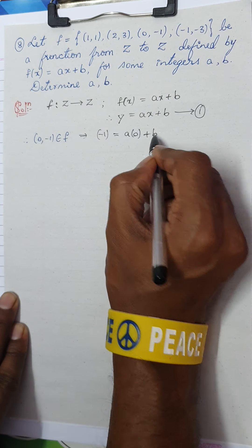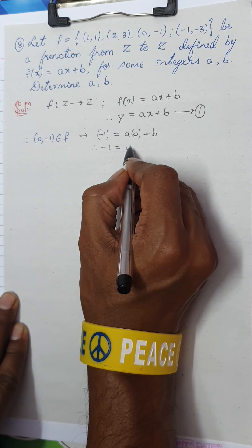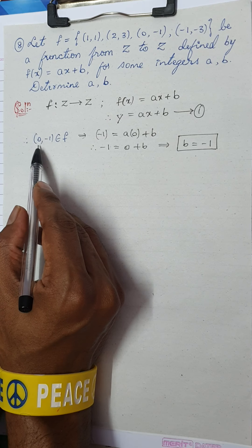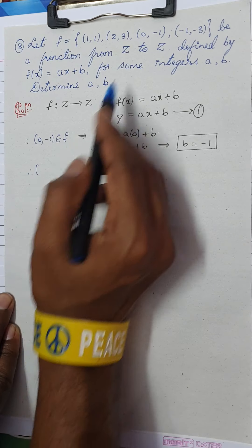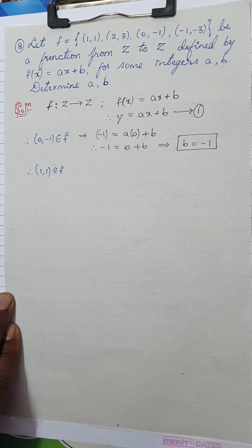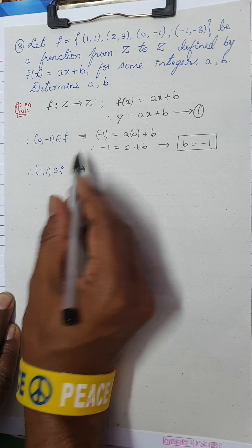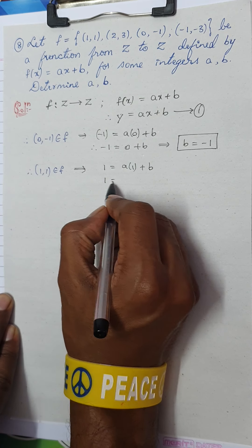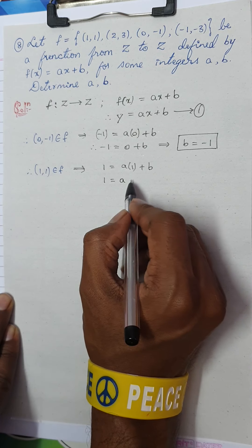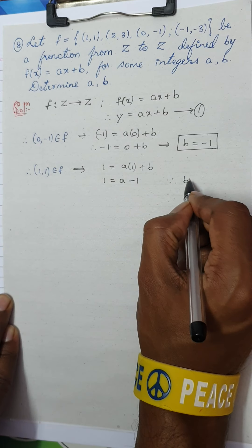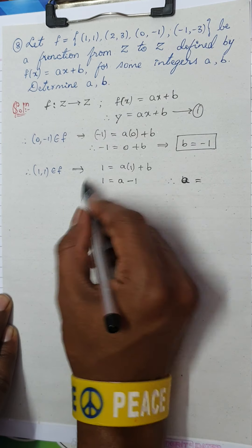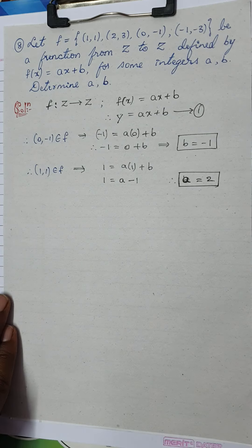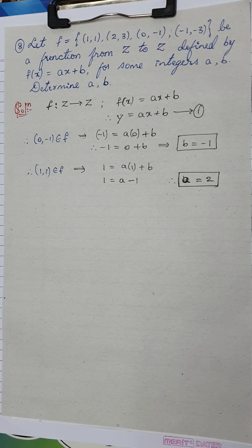Take (0, −1): substituting x = 0, y = −1 gives −1 = a(0) + b, so b = −1. Now take (1, 1): substituting x = 1, y = 1 gives 1 = a(1) + (−1), so 1 = a − 1, therefore a = 2. Hence a = 2 and b = −1.